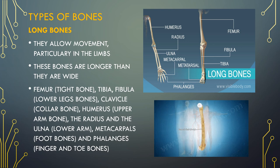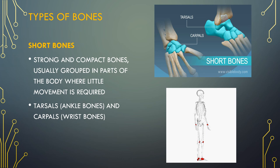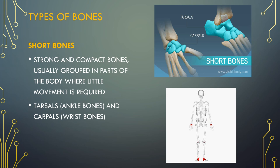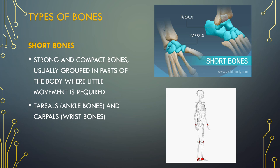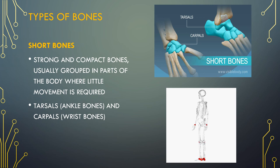And bones in the upper limbs like the humerus of the arm, the radius, the ulna, the metacarpals and the phalanges. Short bones are about as long as they are wide. Located in the wrist and ankle joints, short bones provide stability and some movement. They are strong and compact bones, usually grouped in parts of the body where little movement is required, like the tarsals, the ankle bone, and the carpals, the wrist bone.